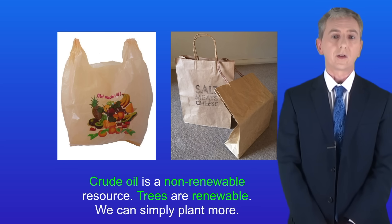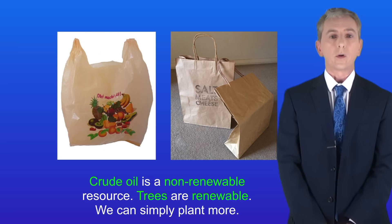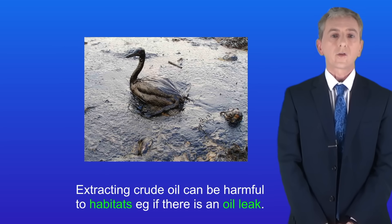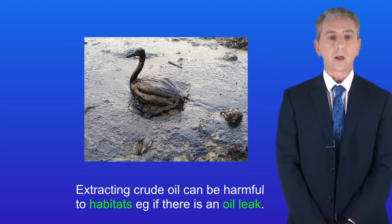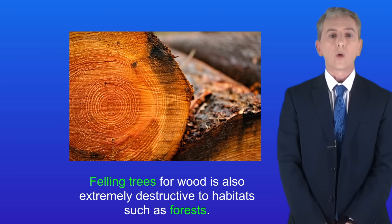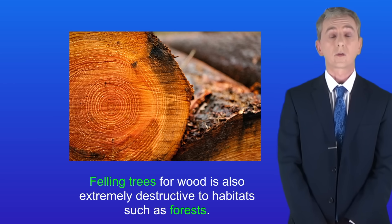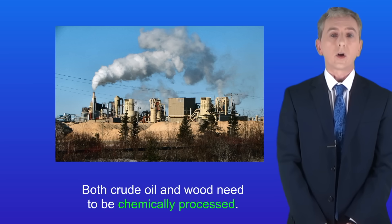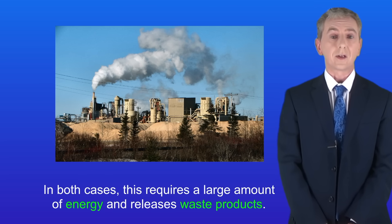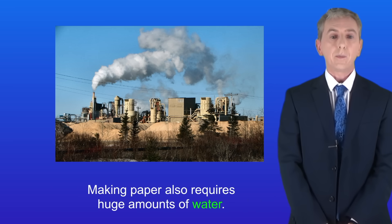Crude oil is a non-renewable resource, however trees are renewable — we can simply plant more. Extracting crude oil can be harmful to habitat, for example if there's an oil leak. Felling trees for wood is also extremely destructive to habitats such as forests. Both crude oil and wood need to be chemically processed; in both cases this requires a large amount of energy and releases waste products. Making paper also requires huge amounts of water.